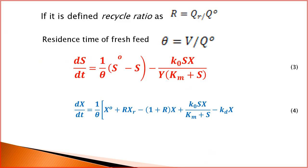If the recycle ratio r = Qr/Q0 and the residence time theta = V/Q0 are defined, the simplified balance equations become: dS/dt = (1/theta)·(S0 − S) − k0·S·X / (Y·(Km + S)); and dX/dt = (1/theta)·(X0 + r·Xr − (1 + r)·X) + k0·S·X / (Km + S) − kd·X.